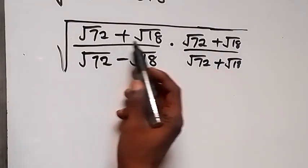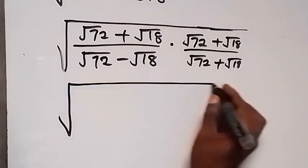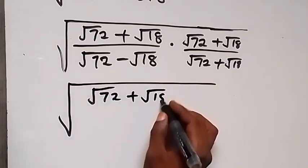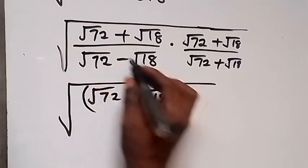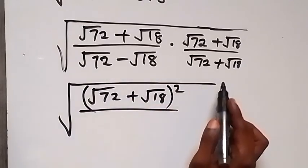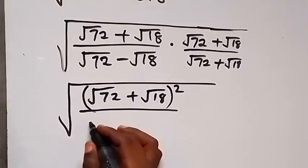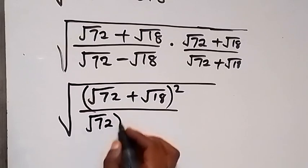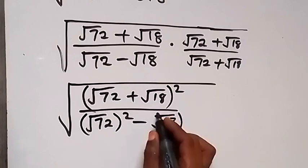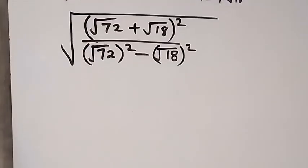From here we multiply straight. In the numerator we have (root 72 plus root 18) squared, and in the denominator we multiply itself — that follows from the difference of two squares, giving us root 72 squared minus root 18 squared.